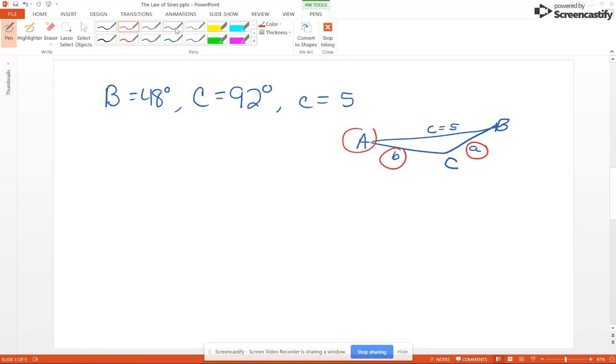Now let me circle what we're looking for here - makes it easier to spot. Now the first thing I'm going to find is angle A because it is the easiest of everything because the sum of the angles of a triangle is always 180 degrees. If you know two of the angles, you're just going to take 180 minus those two, so 180 minus 48 minus 92 and that's going to give us 40 degrees.